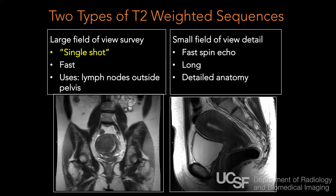There's not just one T2. T2-weighted imaging is very important, but we also do very large surveys using single-shot fast spin echo sequences that are very fast — just a couple of hundred milliseconds per slice — though they tend to be a little blurry. Those are used to look for lymph nodes or other masses outside the pelvis. We also do very high-resolution fast spin echo sequences that take several minutes each, giving a detailed sagittal view of the uterus anatomy.